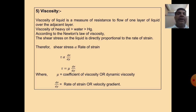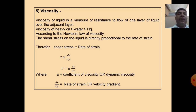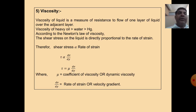The next property is viscosity. Viscosity of a liquid is a measure of resistance to flow of one layer of liquid over another adjacent layer. According to Newton's law of viscosity, the shear stress on a liquid is directly proportional to the rate of strain, also called the velocity gradient. Therefore, tau ∝ dv/dy. This gives tau = mu × (dv/dy), where mu is the coefficient of viscosity or dynamic viscosity, and dv/dy is the rate of strain or velocity gradient.